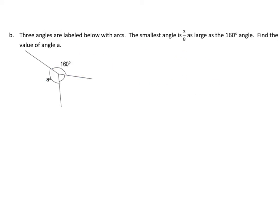Alright, this is fairly complex. Three angles are labeled below with arcs. The smallest angle is 3 eighths as large as the 160 degree angle. Find the value of angle A. First thing we need to know is that the total number of degrees around this point right here would be 360 degrees. So the whole is 360. But we need to do a little bit of work before we get there. Let's look at the second sentence here. The smallest angle is 3 eighths as large as the 160 degree angle. Let's break down that part first.